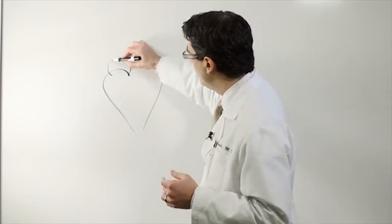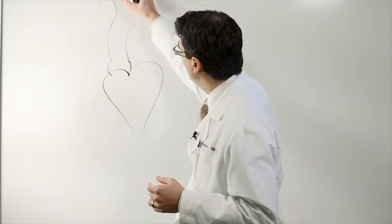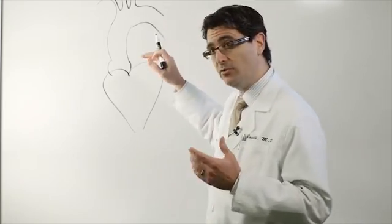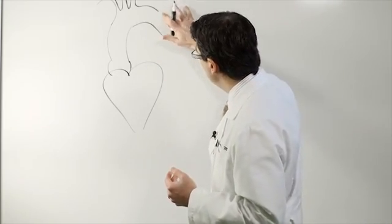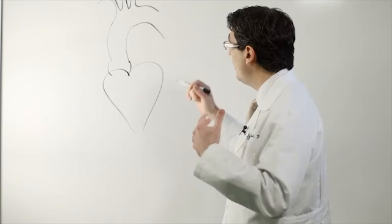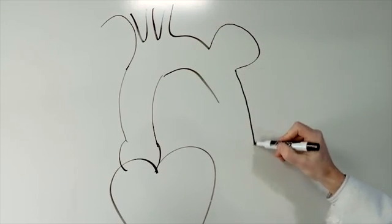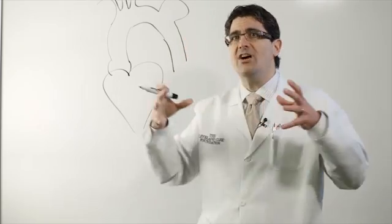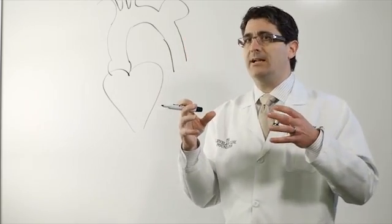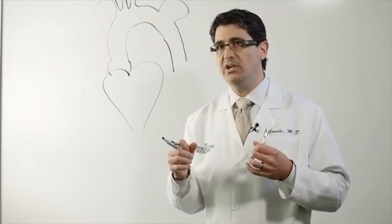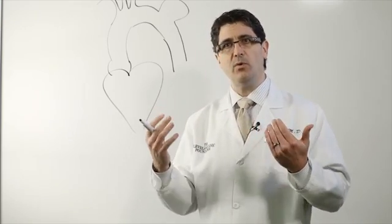One is what we call a saccular aneurysm, and that's the kind of aneurysm I think a lot of people think of, where there's a weak spot in the aorta and an area that's bulging out the side like a bulge in your tire. Those are more dangerous because they're more difficult to predict when they're going to rupture.